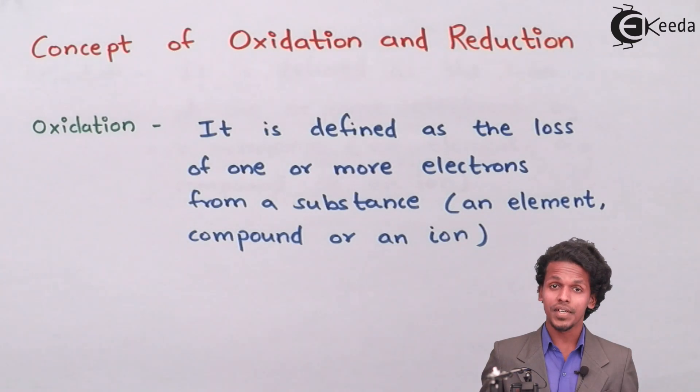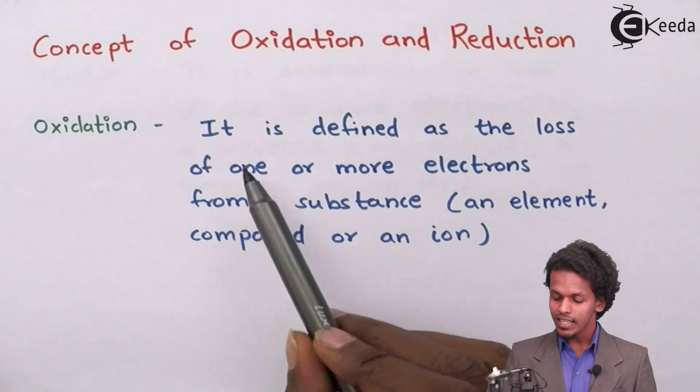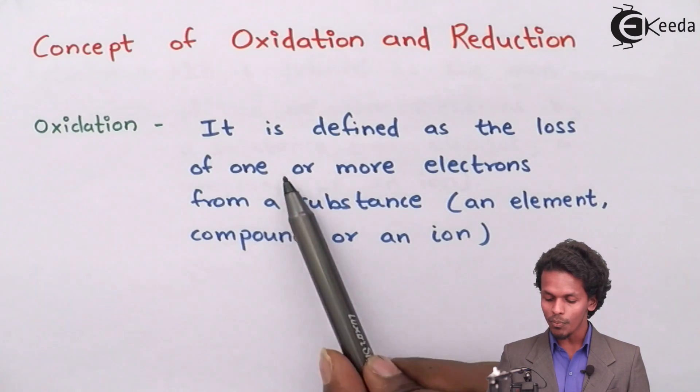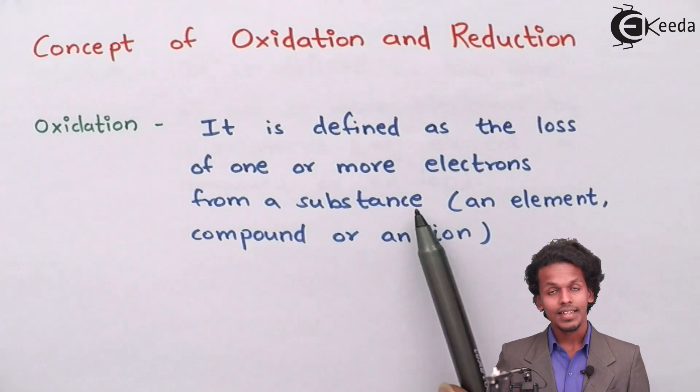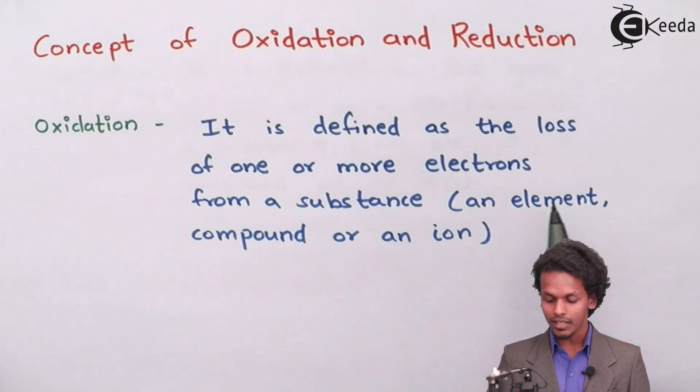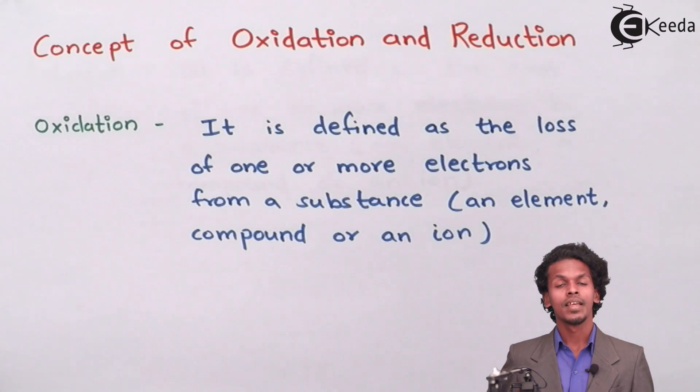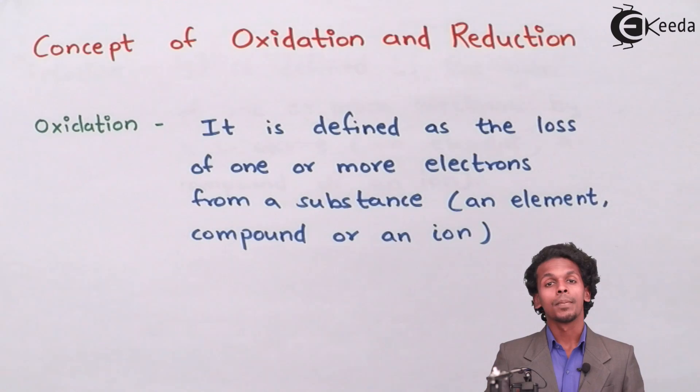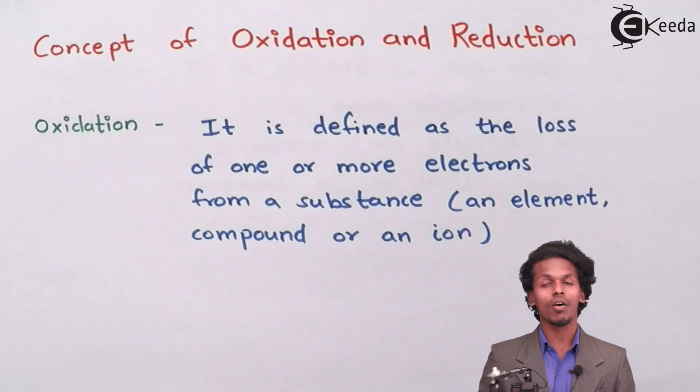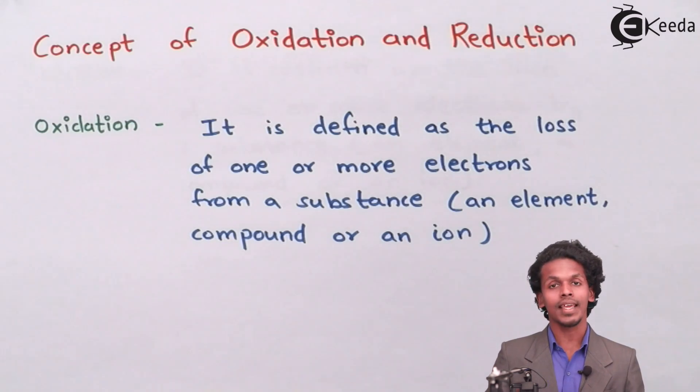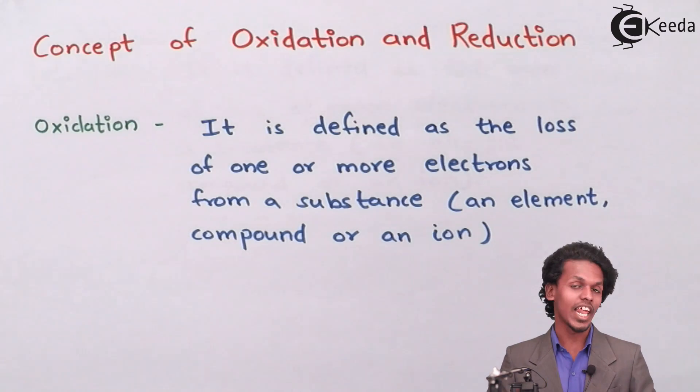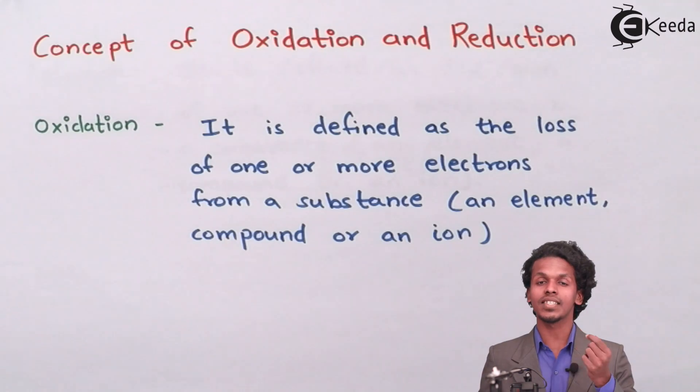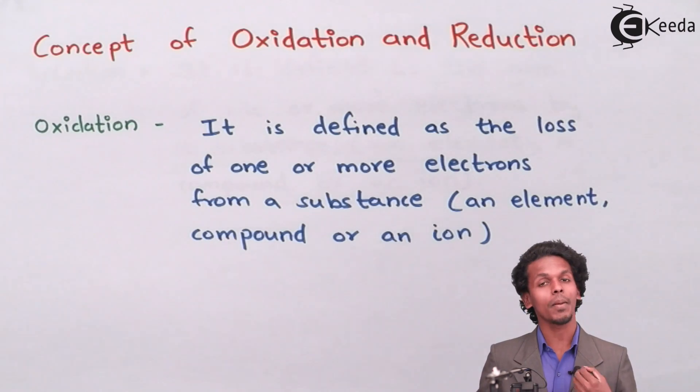According to the oxidation definition, it is defined as the loss of one or more electrons from a substance, and that substance might be an element, compound, or an ion. You might be thinking oxidation means involvement of oxygen—that is true. But on the basis of electrochemistry or transfer of electrons, oxidation means the reaction in which electron is lost by an element. Let me give you an example so you can understand it better.